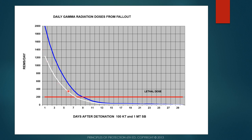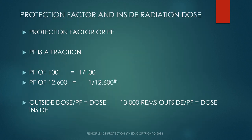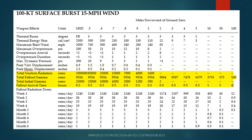The gamma radiation decay curve — shown here for a 100-kiloton and a one-megaton — shows there's not a big difference even though the one megaton is ten times the size. They both follow the same radiation decay, and by the end of 30 days it's basically back to normal. The protection factor — which was never intended to be used for underground shelters, by the way — is a fraction of what gets through the shielding. A protection factor of 100 means one-hundredth of the outside dose gets through; a protection factor of 12,600 means one twelve-thousandth six-hundredth of the outside dose.